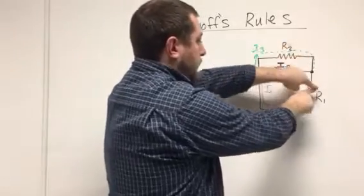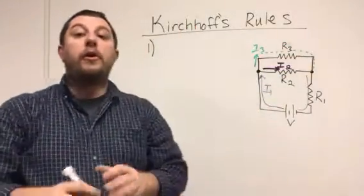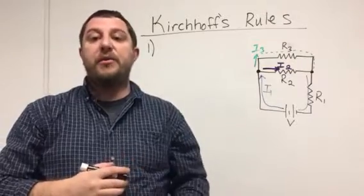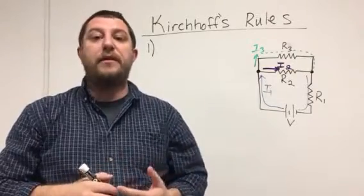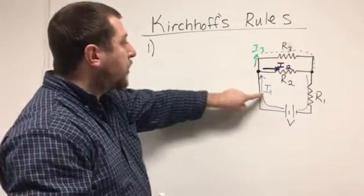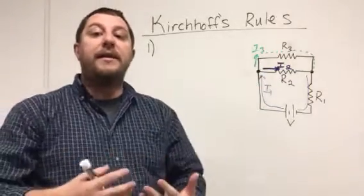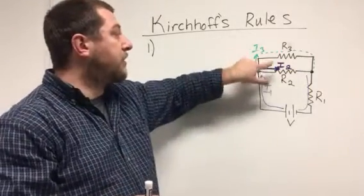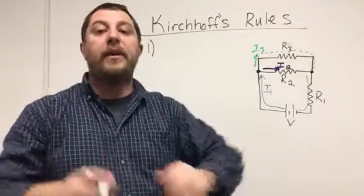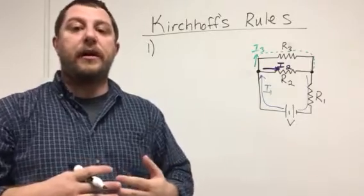So Kirchhoff's first rule says that the current that enters into a junction must be the same amount of current that exits the junction. Whatever total current I1 is hitting this junction must be the total current flowing out. In this case, the currents I2 and I3 must add up to I1. In words, it simply says the total current that enters a junction must be the current that exits the junction.